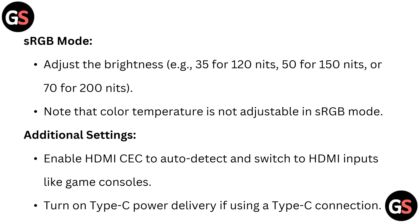In sRGB mode, adjust the brightness — for example, 35 for 120 nits, 50 for 150 nits, or 70 for 200 nits. Note that Color Temperature is not adjustable in sRGB mode. For additional settings, enable HDMI CAC to Auto to detect and switch to HDMI inputs like game consoles.